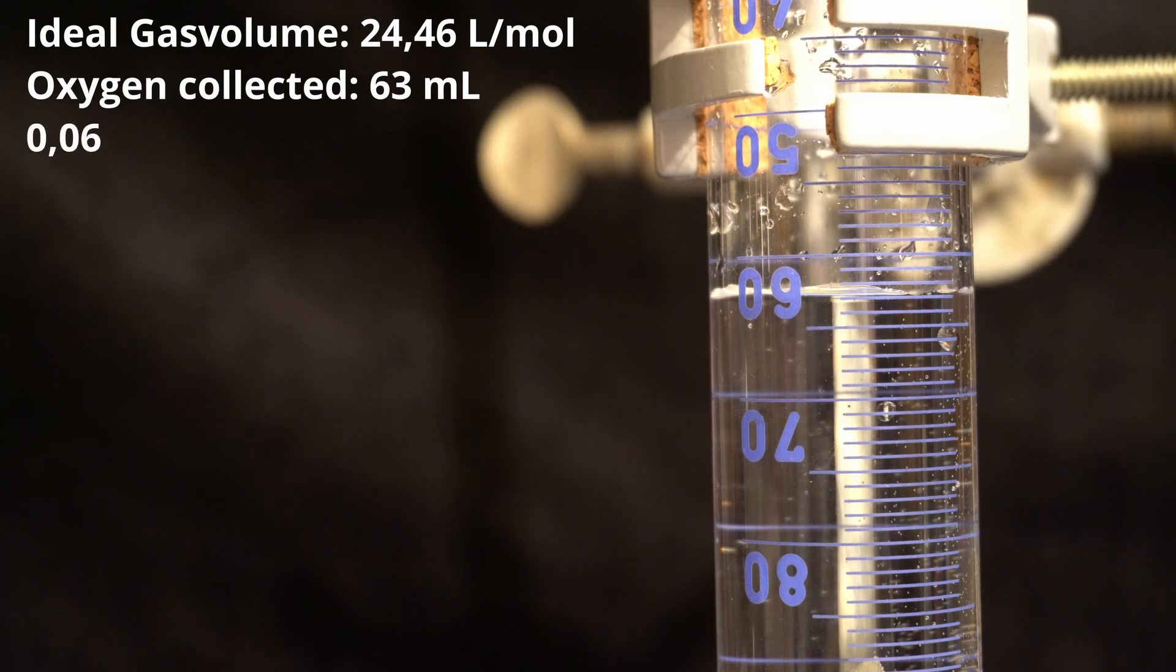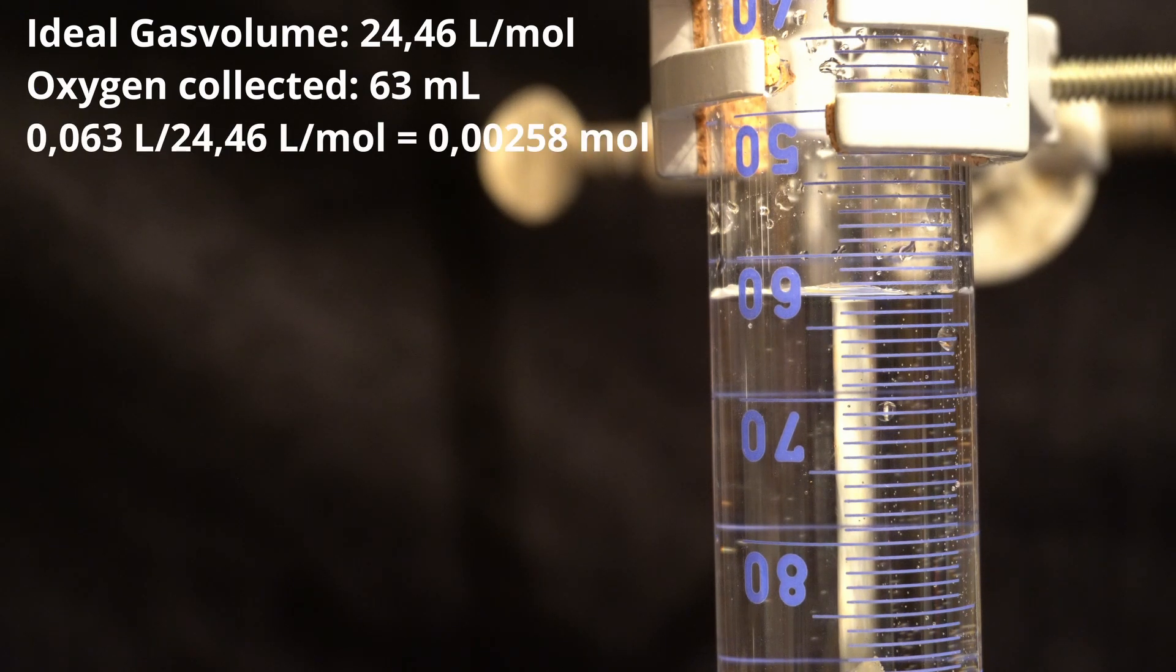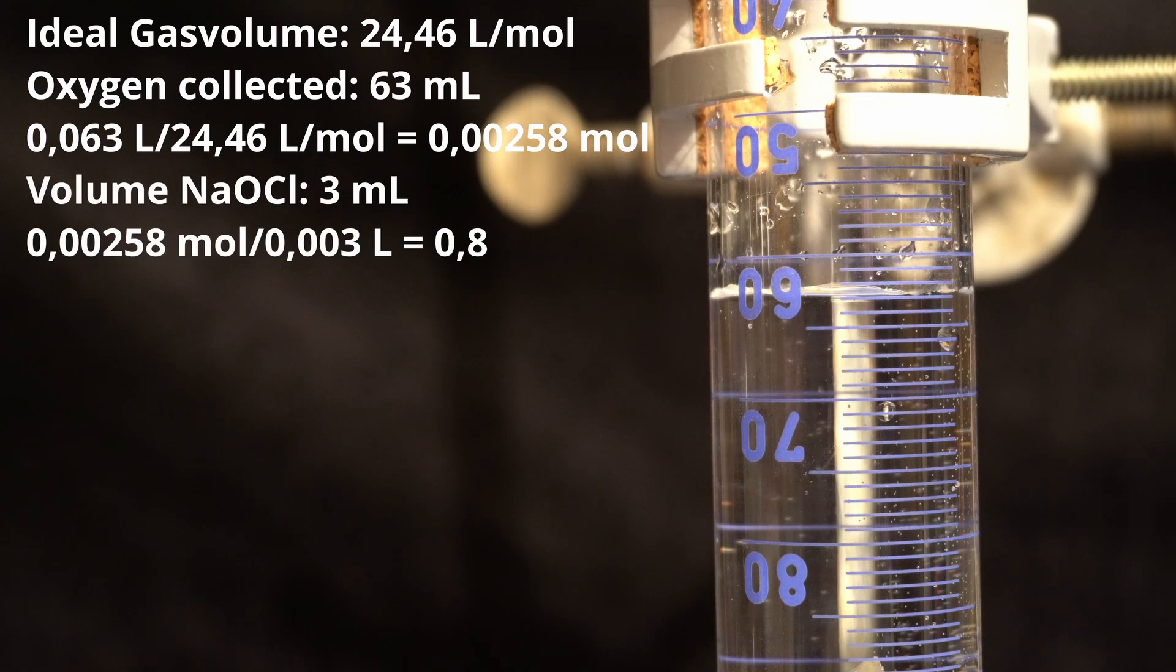This corresponds to 0.00258 moles of oxygen. I put in 3 mL of hypochlorite in the flask, meaning the concentration of my hypochlorite is 0.85 moles per liter, which is equivalent to 5.2%. This explains the terrible yield and also the white precipitate when dissolving the sodium hydroxide in the hypochlorite.